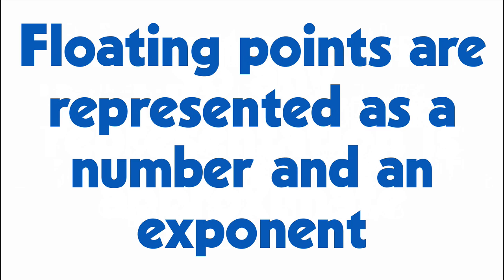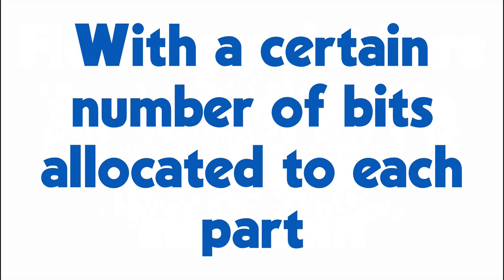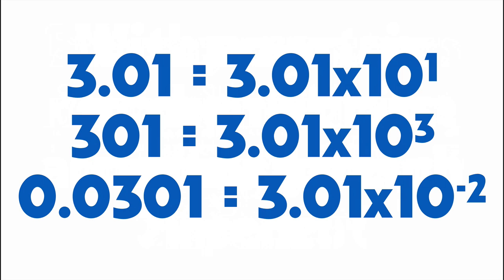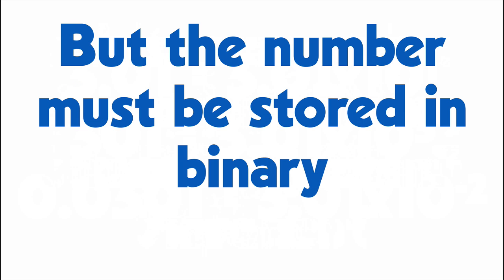A floating point representation splits the number into two parts, a base and an exponent, each of which is allocated a certain number of bits internally. 3.01 is represented as 3.01 times 10 to the first, whereas 301 is 3.01 times 10 to the third. That's part of the representation, but our problem really starts when we need to convert these numbers into binary digits.